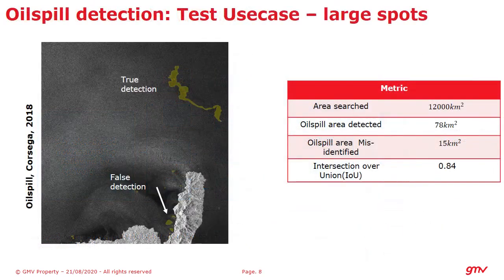Here is the result applied to the oil spill which occurred in Corsica in 2018. We see clearly that the major oil spill has been detected with precision, but there are also some false detections. Overall we have an intersection over union of 84 percent.